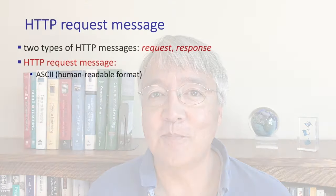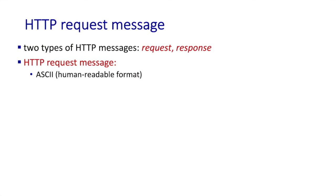Now that we've looked at the two styles of HTTP connections, we can dive into the details of the HTTP messages themselves. Remember back in Section 1.1 we said that a protocol defines the format and order of messages sent and received among network entities, and the actions taken when these messages are sent and received. There are two types of HTTP messages: request messages and response messages.